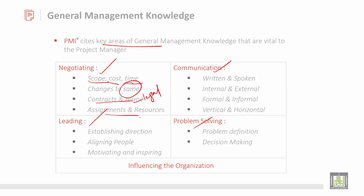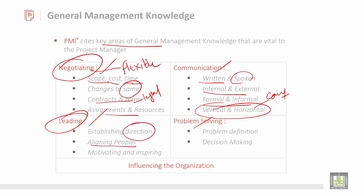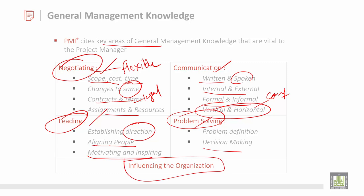Then assignments and resources — what are the resources and how they can be used. It is negotiable and flexible. Then communication means the type — how you deal with your employees, like written and spoken, internal and external, formal and informal, and vertical and horizontal. Then leading means how you direct — establish a direction, you should have a firm leader and good managers to align customers, suppliers, and everyone, and always be motivating and inspiring. This all leads to problem solving — how you define the problem and make a decision to solve it, which all affects the organization.